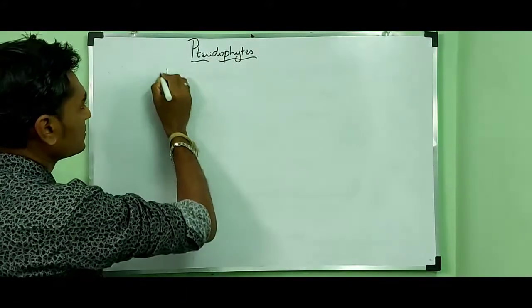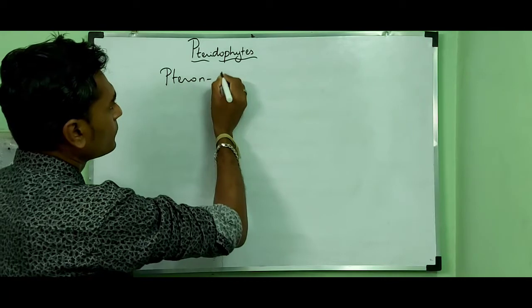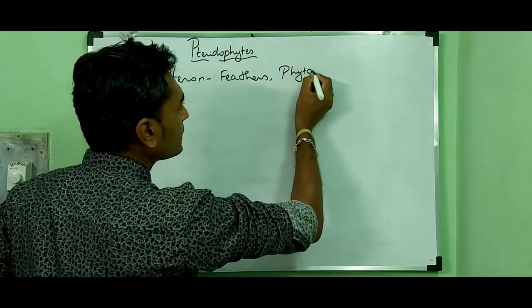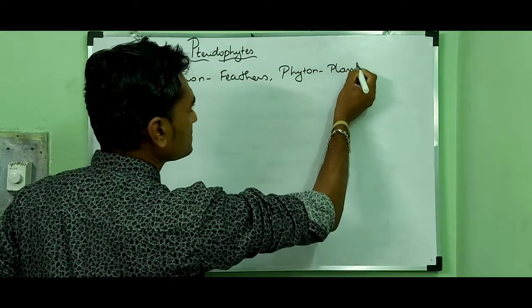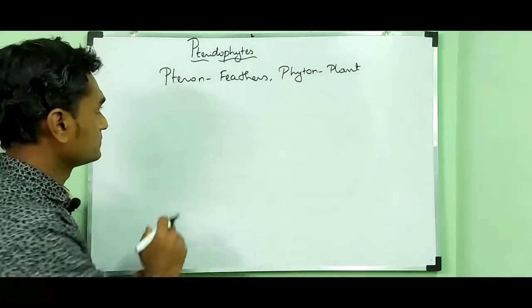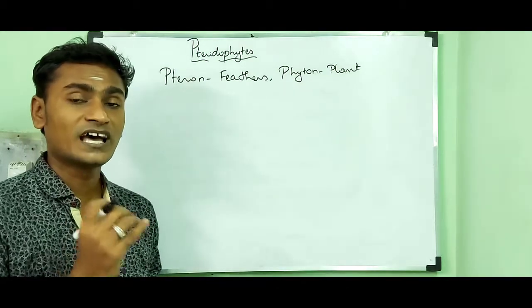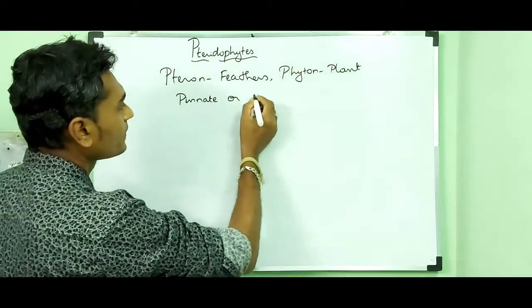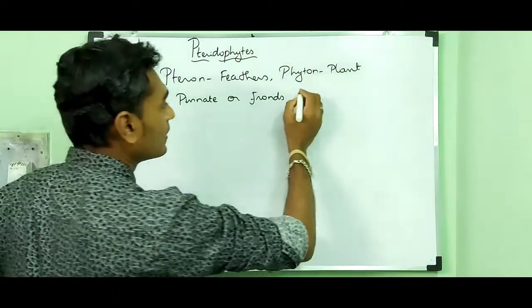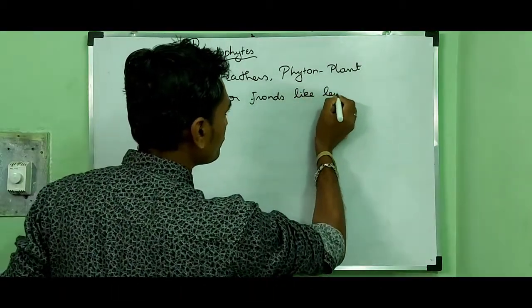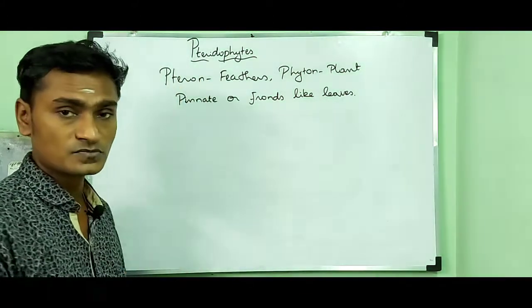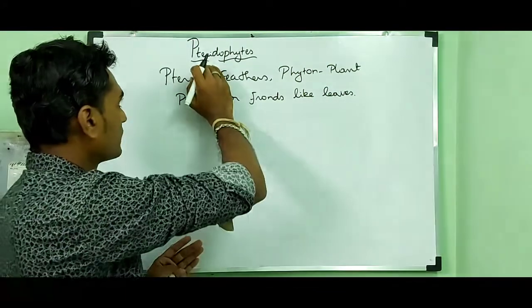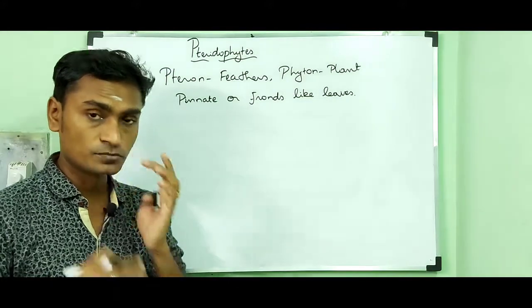In Greek, pteron means feathers and phyton means plant. The plant group which have pinnate frond-like leaves is said to be pteridophytes.